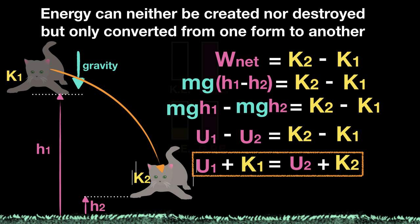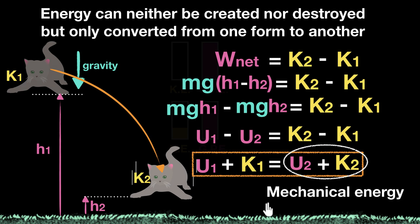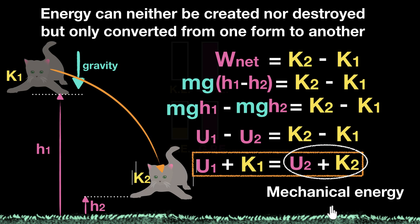Since this total energy remains the same, we give it a name. This total value — potential plus kinetic — is often called the mechanical energy. So if gravity is the only force acting on a body, then regardless of what path it takes to go from one point to another, its total mechanical energy should remain the same. The next question is: what happens if other forces start acting on this body? Will the mechanical energy still remain the same?